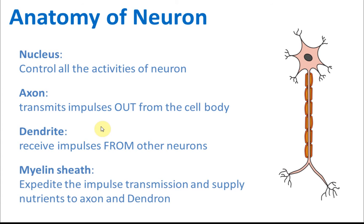Inside neurons, we have the myelin sheath. This is the tissue that encloses the neuron, and its function is to expedite impulse transmission — it makes transmission faster. At the same time, it can supply nutrients to axons and dendrites. So this tissue surrounding the neuron is called the myelin sheath. Now let's study the three types of neurons in more detail.